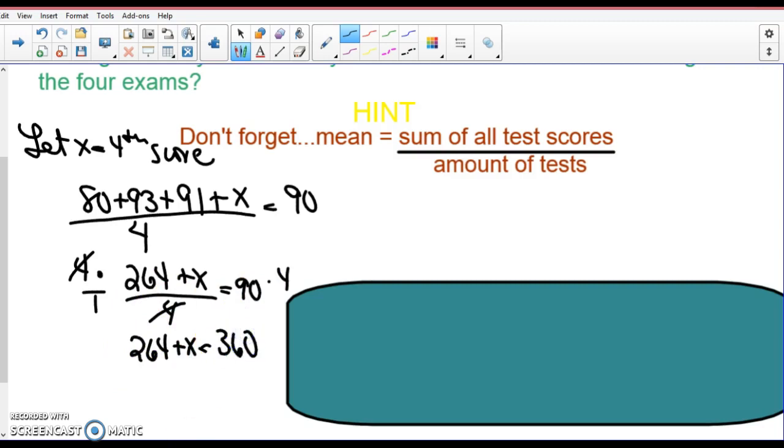What's the opposite of dividing by four? Multiplying by four. So I'm going to multiply both sides of this equation by four. This is four over one. Four divided by four is one. So on this side, I'm looking at 264 plus X equals 360. Because 90 times 4 is 360. And then, how do I solve for X? This is a positive 264. What's the opposite of plus 264? Minus 264.